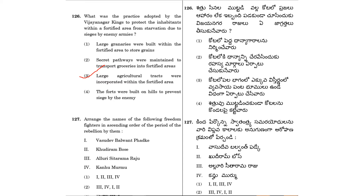Question 127: Arrange the names of the following freedom fighters in ascending order of the period of their rebellion. We first have the rebellion of Kanhu Murmu, next the rebellion of Khudiram Bose, then the rebellion of Alluri Sitarama Raju. So the character options are 4, 1, 2, 3.